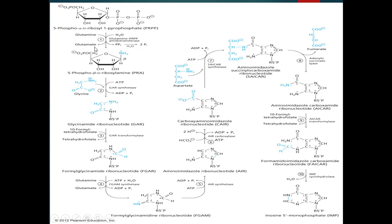In the second step, PRA or 5-phospho-beta-D-ribosylamine is converted into glycinamide ribonucleotide, or GAR. Glycine is added in this step and energy is used in the form of ATP, which is converted into ADP and inorganic phosphate. The enzyme for this process is GAR synthetase.